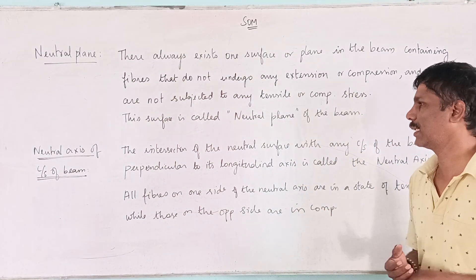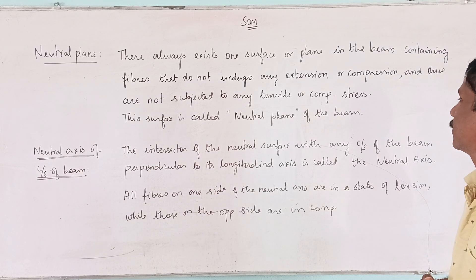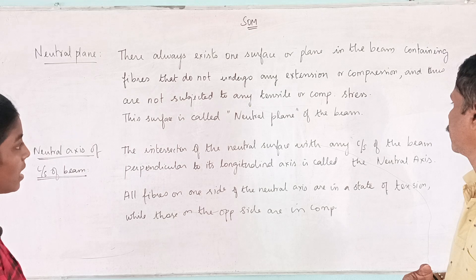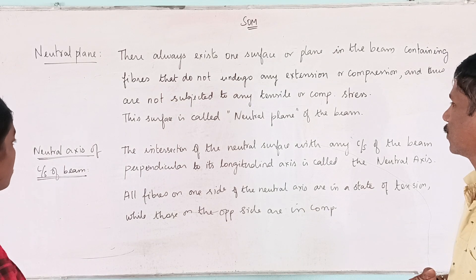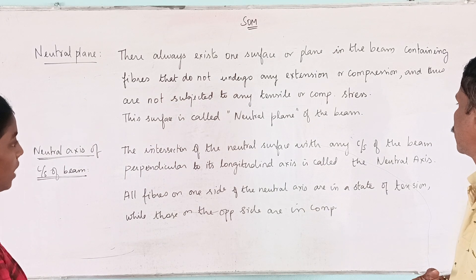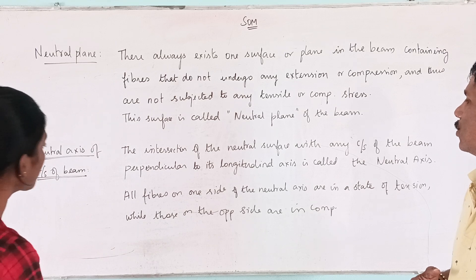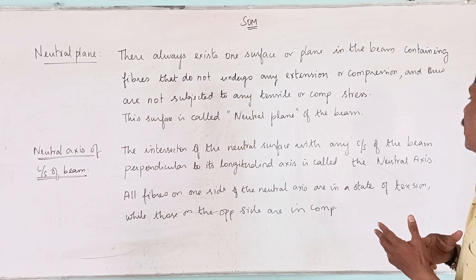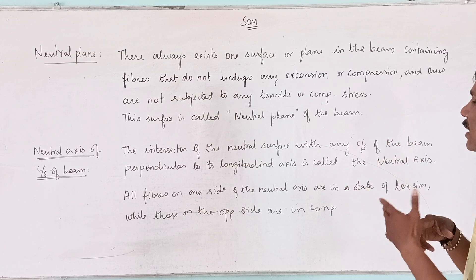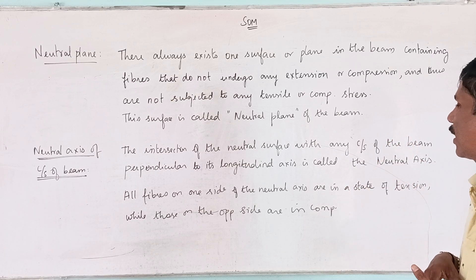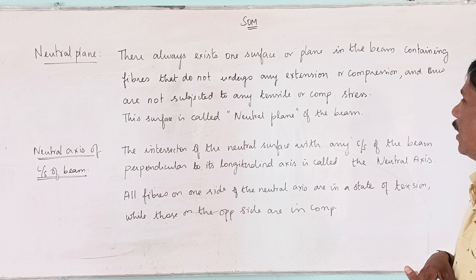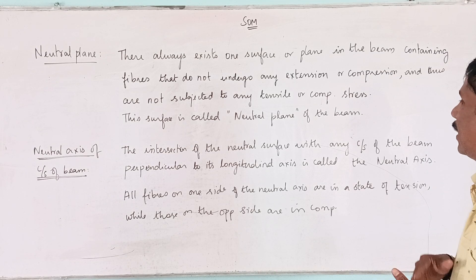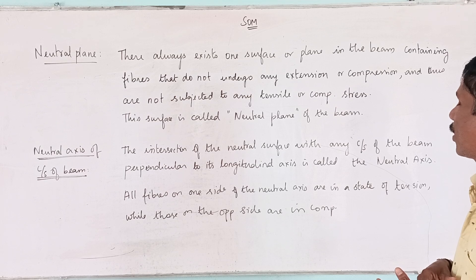The neutral axis is the intersection of the neutral surface with any cross-section of the beam perpendicular to its longitudinal axis. This is called the neutral axis, which is a horizontal axis within the cross-section.